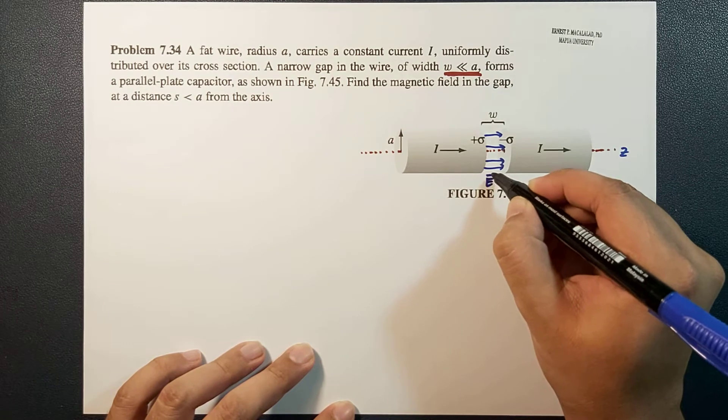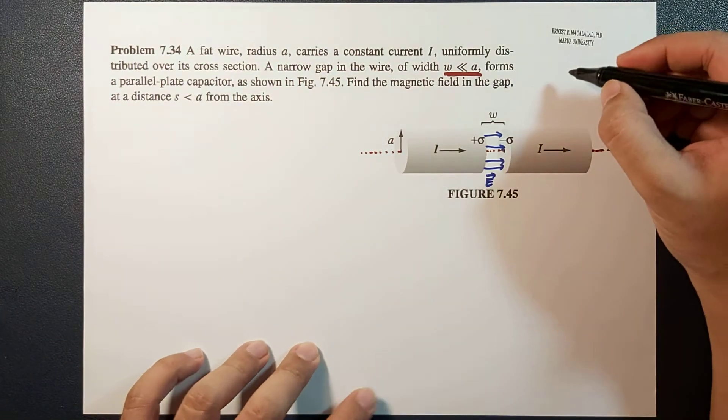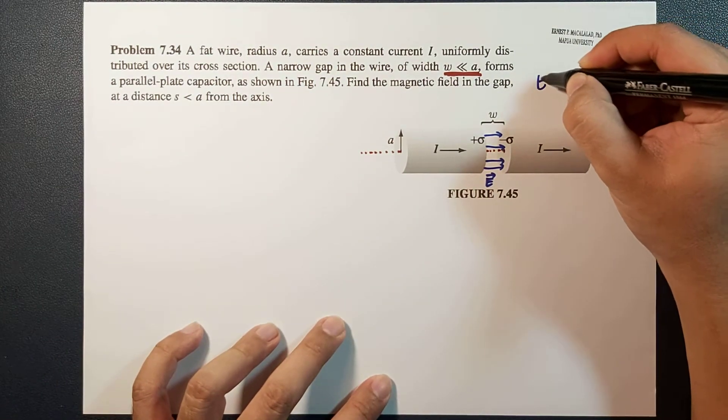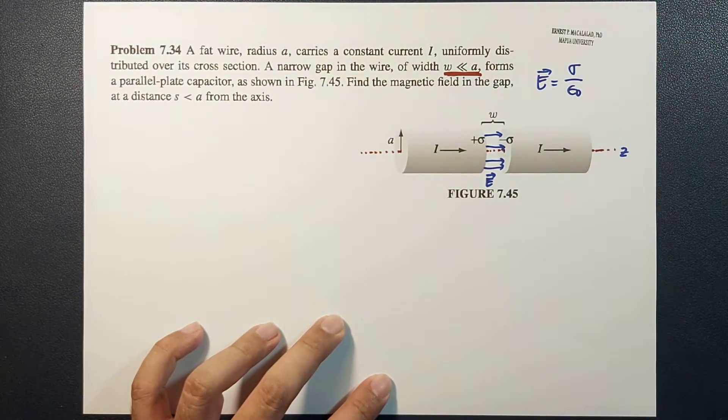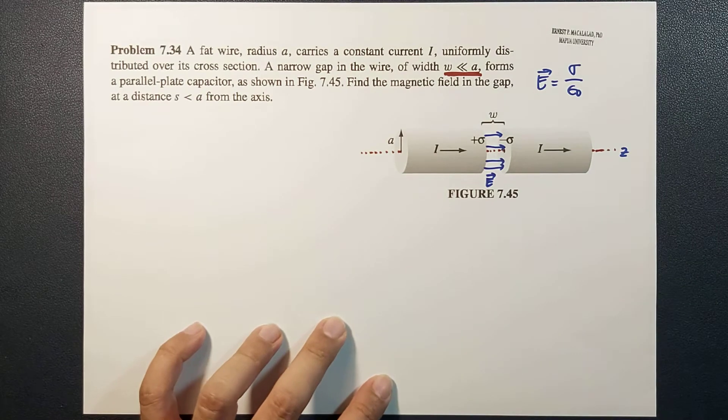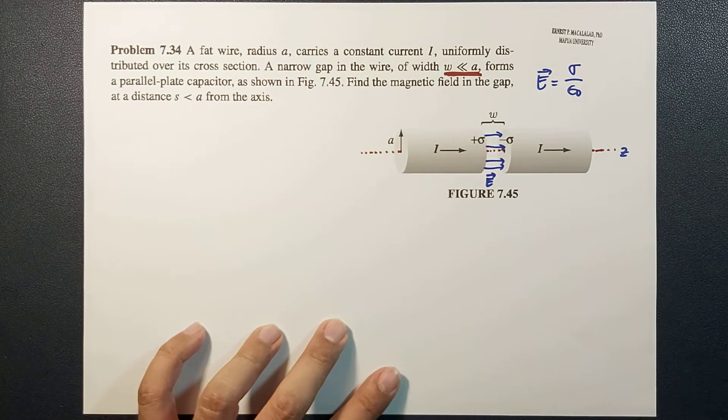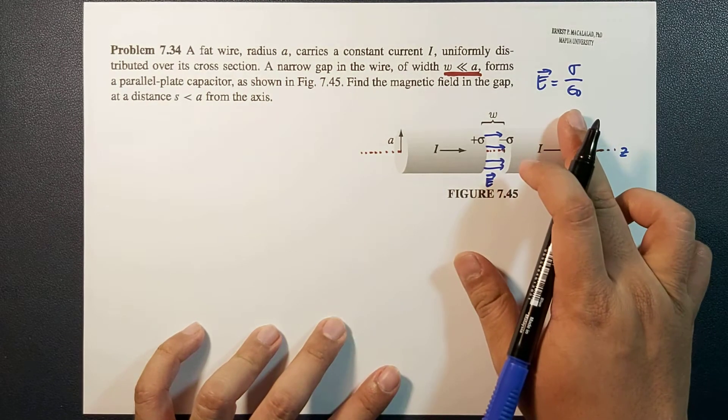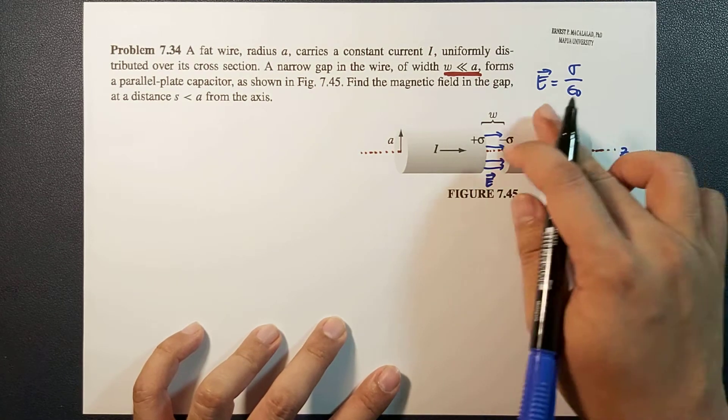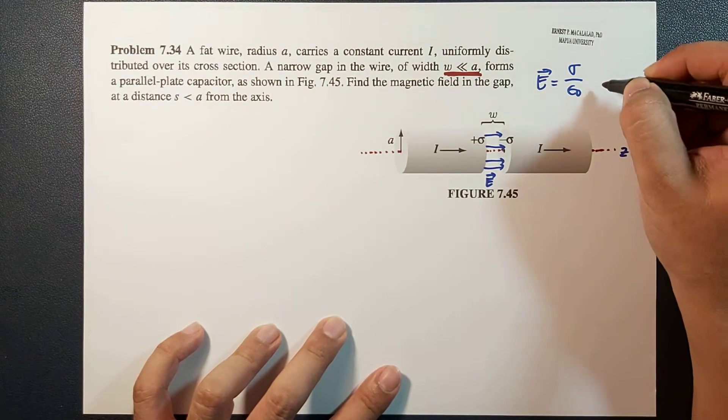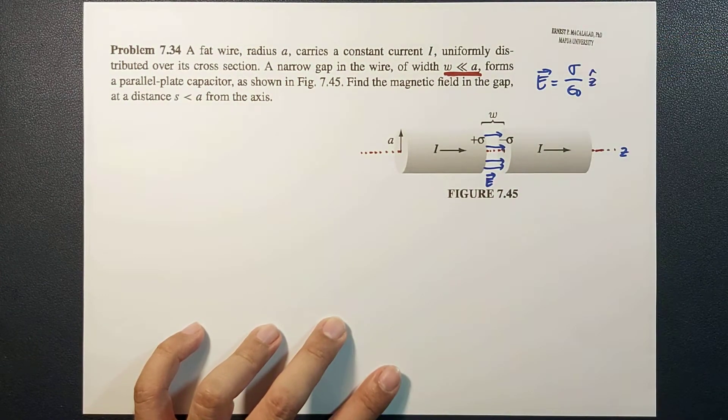Okay, so this is your electric field. For a parallel plate capacitor, the electric field would be equal to sigma divided by epsilon naught, where sigma is the surface charge density and epsilon naught is the permittivity of free space. And the direction of the electric field in this case would be along the Z direction, so that would be your Z hat.